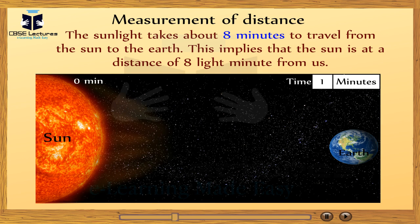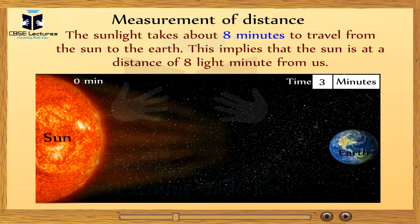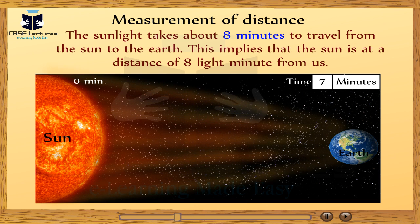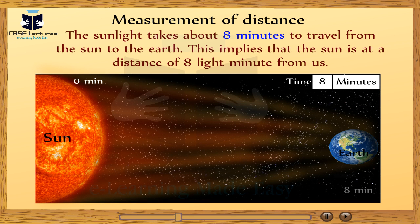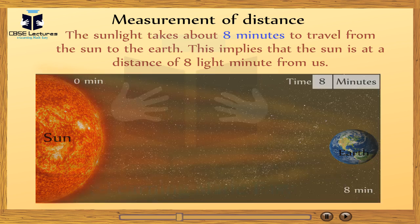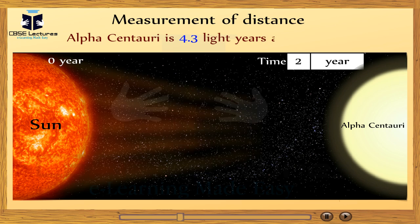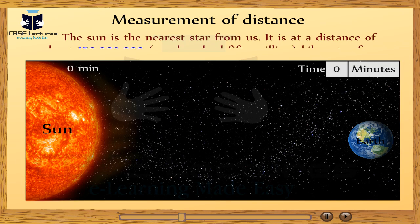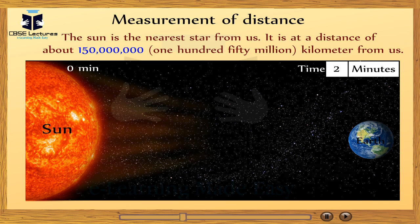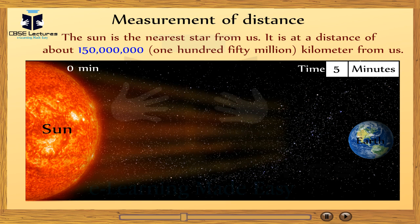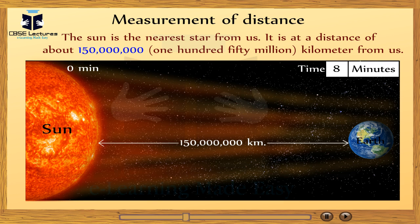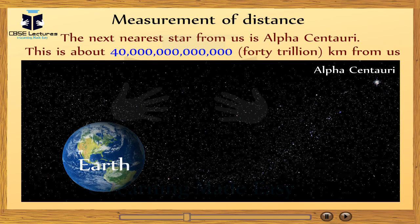The sunlight takes about 8 minutes to travel from the sun to the Earth. This implies that the sun is at a distance of 8 light minutes from us. Alpha Centauri is 4.3 light years away from us. The sun is the nearest star from us; it is at a distance of about 150 million kilometers from us. The nearest star after the sun is Alpha Centauri, which is about 40 trillion kilometers from us.